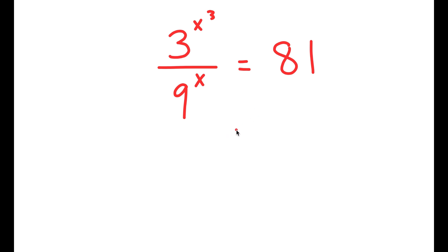In this equation, I have 3 to the power of x to the power of 3 over 9 to the power of x, and that is equal to 81.